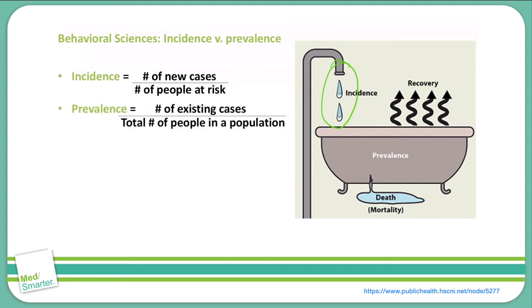Prevalence, however, is the number of existing cases. Using the bathtub example, that's the number of cases in the bathtub over the total number of people in the population — how many people want to use the bathtub versus how many are actually in it.